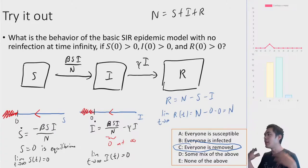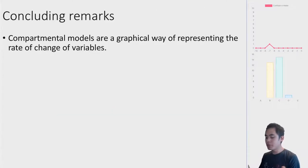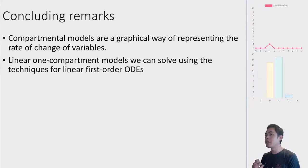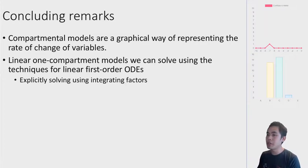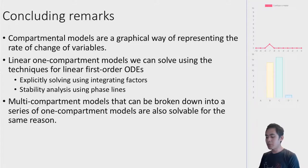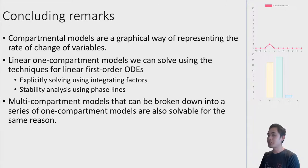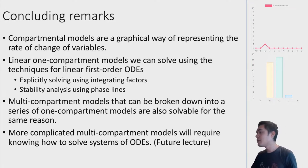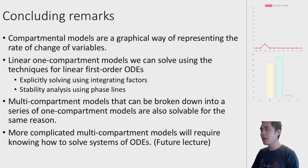Obviously, this is a super simple infection model. For real pandemics and epidemics there are other parameters, and we'll discuss these more after learning more techniques for solving systems of ODEs. A few concluding remarks: compartmental models are a graphical way of representing rates of change of variables. Linear one-compartment models are solvable using linear first-order ODE techniques — integrating factors or phase line stability analysis. Multi-compartment models that break into a series of one-compartment models are also solvable, but more complicated systems require solving coupled ODEs, which is material for a future lecture.